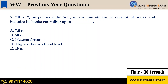A river as per its definition means any stream or current of water and includes its banks extending up to: A. 7.5 meters. B. 50 meters. C. Nearest forest. D. Highest known flood level. E. 15 meters. Your time starts now.